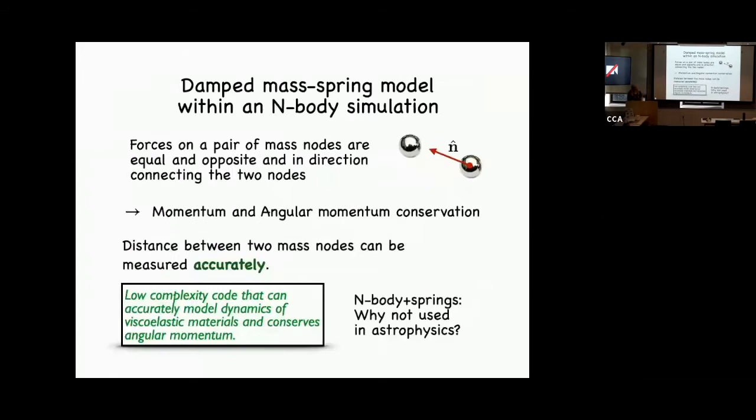This is a low-complexity code that can accurately model the dynamics of viscoelastic materials and conserves momentum. That makes it really powerful and we can do a lot with it. When I was figuring this out I thought — wait, this is too easy, why has nobody done this? I worried about it for a while, going back and forth, but it turns out it's just a really good idea.